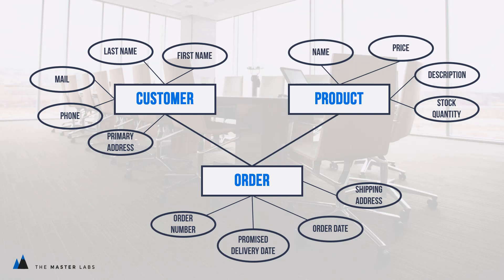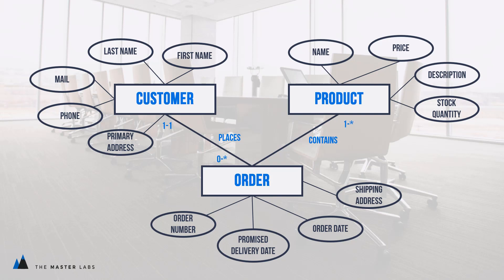We can add extra information — for example, a customer can place an order and an order contains products. We might also want to indicate that an order is placed by one and only one customer, while a customer can place multiple orders. The client told us that a customer doesn't have to place an order to be called a customer, so a customer can place zero or more orders. An order contains one or more products, and a product can be ordered via zero or more orders.